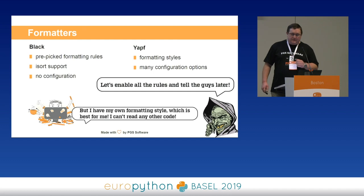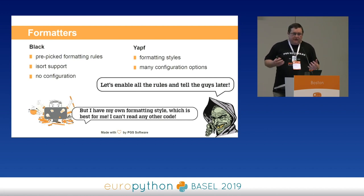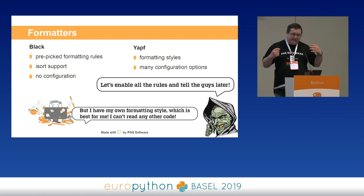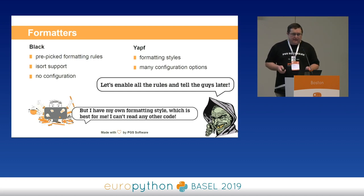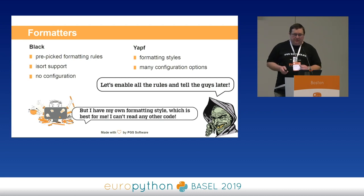The Hobgoblin approach here is to just enable everything and let the guys be shocked by what happened. On the other hand, there is Timmy — developing Python for like five years, he has his own formatting style and he really thinks he can't read any other code. But if we have five Timmys and each of them has a different style, our code might descend into chaos, with everybody shifting it to his own preferences. So using a formatter is a good choice — a formatter we all agreed on, of course.